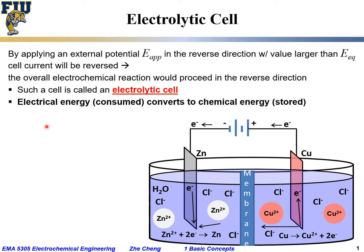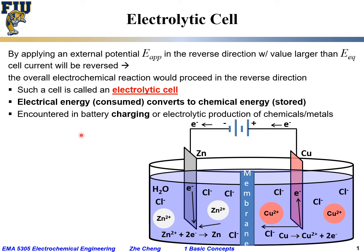This is an electrolytic cell, and people encounter it when charging batteries or when using electrolytic production of chemicals such as chlorine and hydrogen, as well as electrolytic production of metals such as aluminum. In terms of reaction, it is the reverse of the galvanic cell.